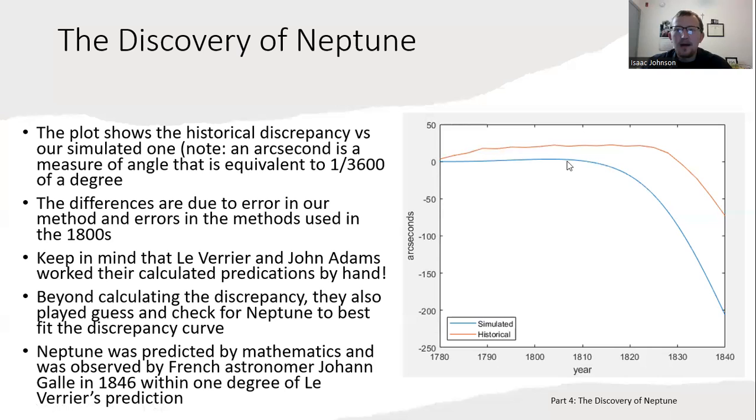Remember, we ran with Neptune's effects and without, and we took the difference. The differences between our results and John Couch Adams are actually quite large. This is probably due to error in our model and his model. But keep in mind that Le Verrier and Adams worked their calculation predictions by hand. Not only did they work them by hand, beyond calculating the discrepancy, they also played guess and check for where to place this new planet so that they would best fit the discrepancy curve with their calculations. Very amazing.